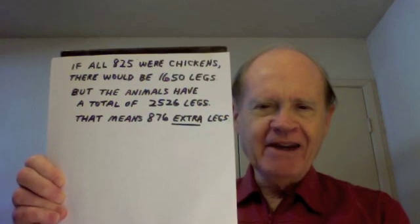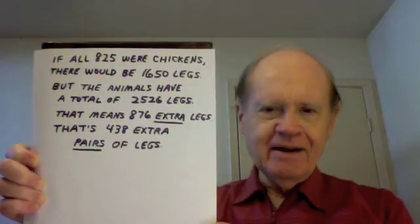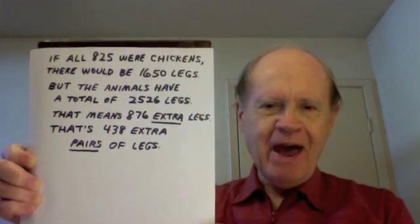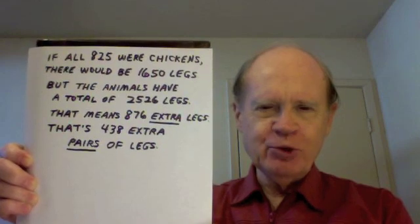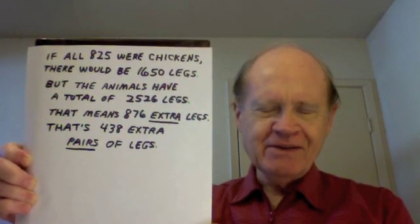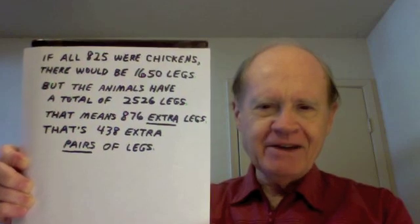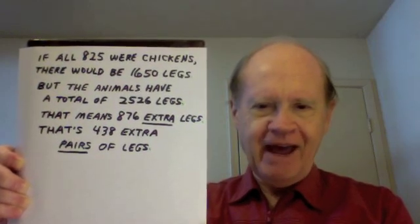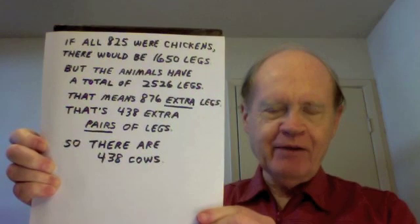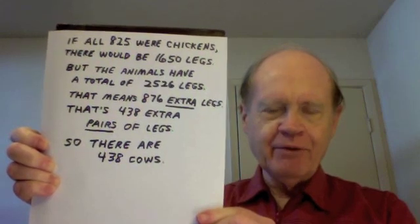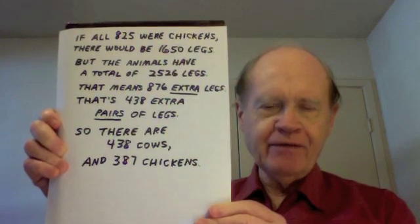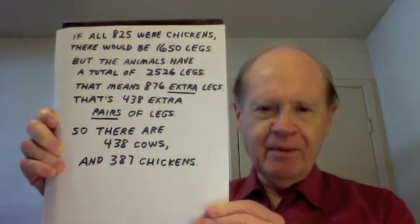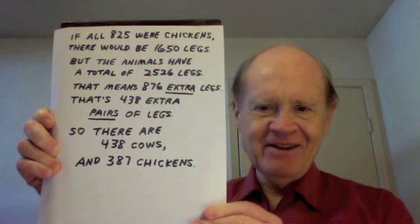...that means there are 876 extra legs. Now each cow has a pair of extra legs compared to a chicken. Dividing 876 by 2, that's 438 extra pairs of legs. And since each cow has an extra pair of legs, there must be 438 cows. Subtracting 438 from the total 825, there must be 387 chickens.